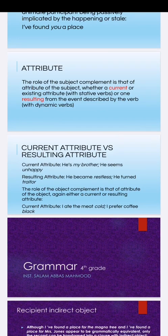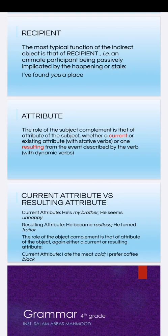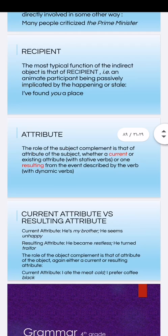Another semantic role is the resulting attribute. For example: 'He turned traitor' — this is a resulting attribute. The attribute describes a quality or state assigned to a noun.